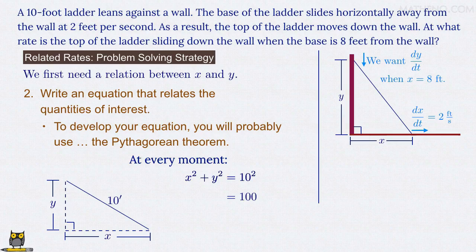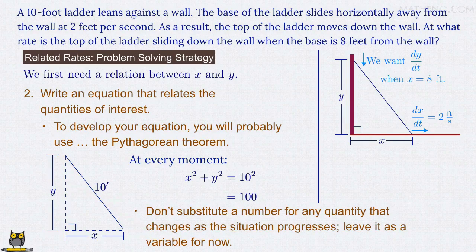A common mistake at this point is to substitute 8 feet for x, but you can't proceed correctly if you do that. Instead, because the location of the ladder's base changes as the ladder slides along the ground, we have to leave x as a variable for now. We'll substitute x equals 8 feet at the end of our solution. By contrast, the ladder's length is always 10 feet, and so we use that as a fixed value in our equation here.